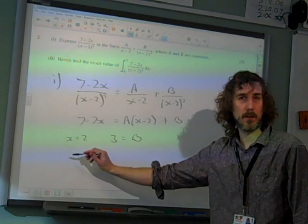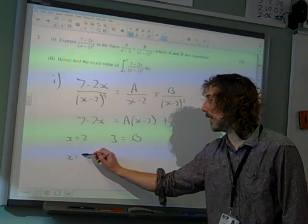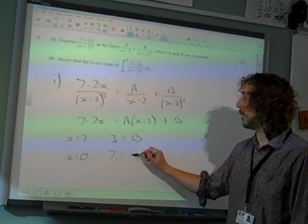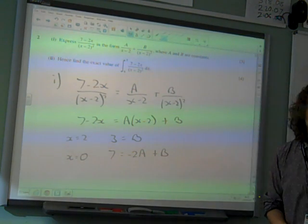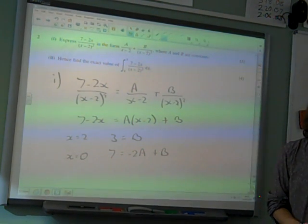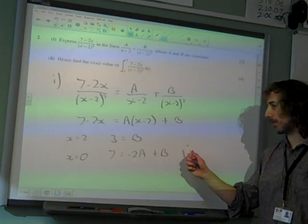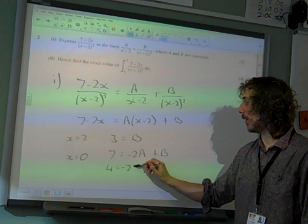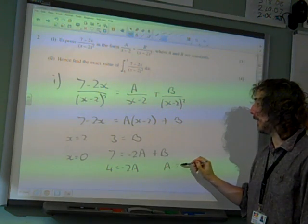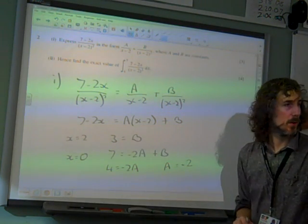And let's choose another value. Why not choose x equals 0? Because that's easy to work with. 7 is minus 2A plus B. But we've already established that B is 3. So that means 7 take away B. So that is 4, is minus 2A. So A is also minus 2. Happy?